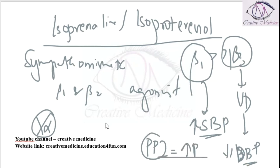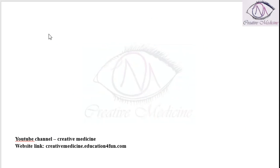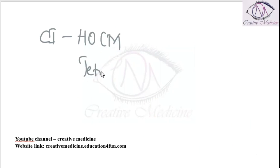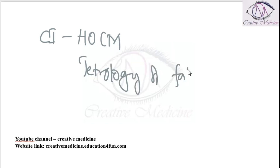This is a shorter-acting drug. Isoprenaline is contraindicated in hypertrophic obstructive cardiomyopathy and also contraindicated in tetralogy of Fallot.